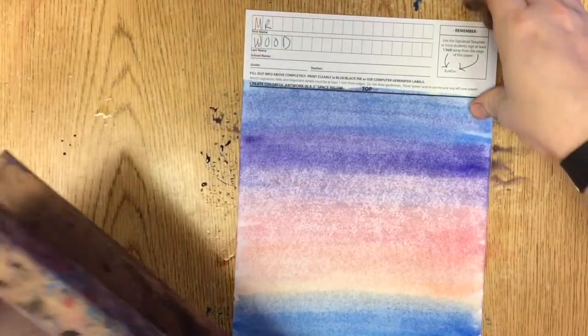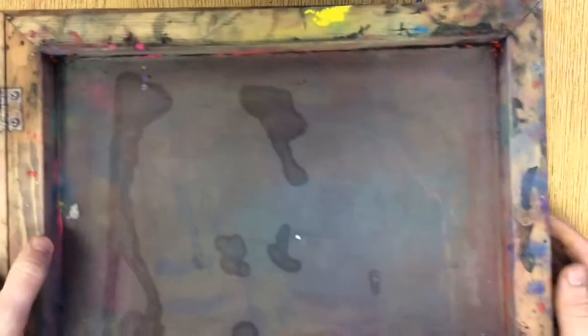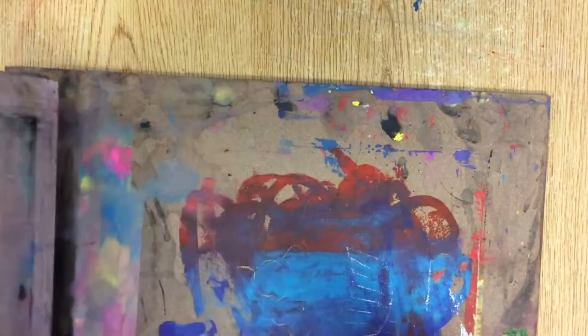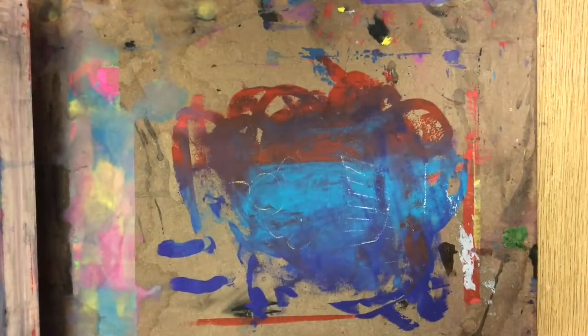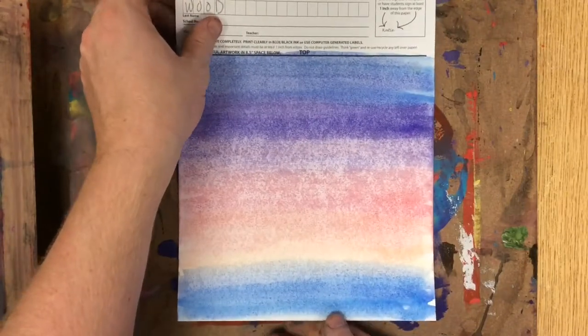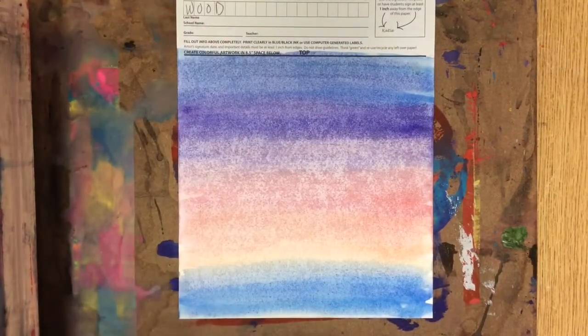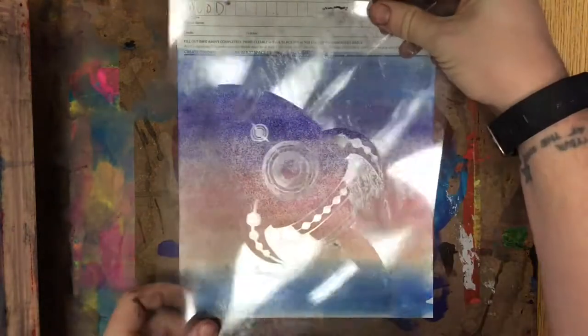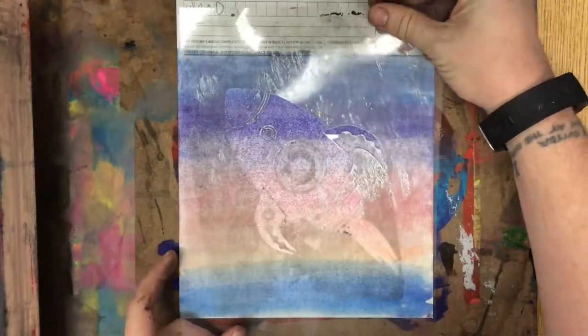Next, what I am going to do is screen print. I am going to set aside my paper, put down my screen, and open that up. I am going to put my paper on top of my board, then put a stencil on top of my paper.